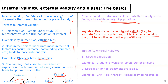There are two main threats to external validity. The first is that the study was conducted in a special population — maybe among physicians who may have higher health literacy and may be more or less likely to adhere to study protocols, or it could be a single-center analysis in one country that may not be applicable to other countries.